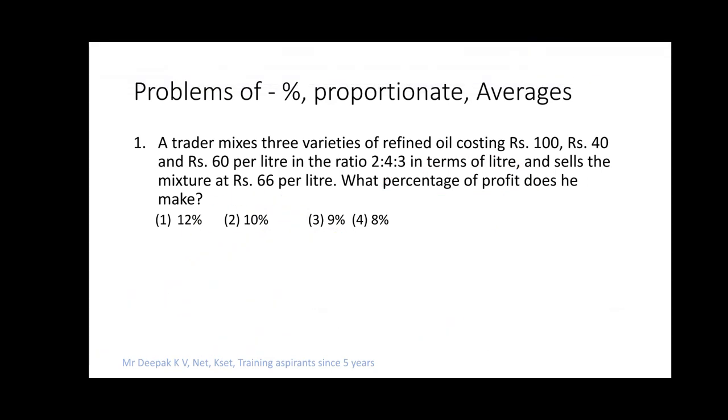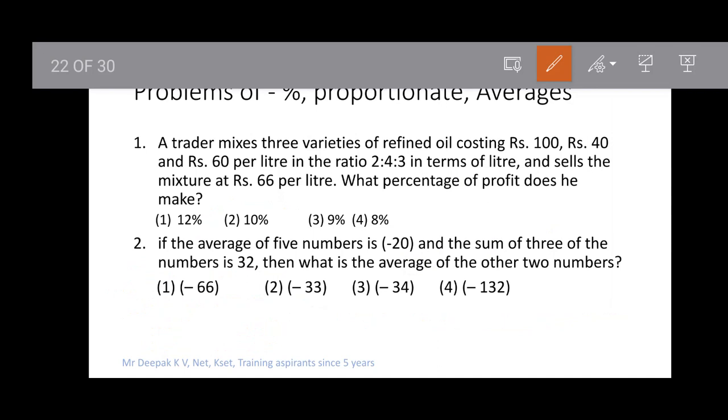Question 2: If the average of 5 numbers is -20 and the sum of 3 of them is 32, what is the average of the other 2 numbers?